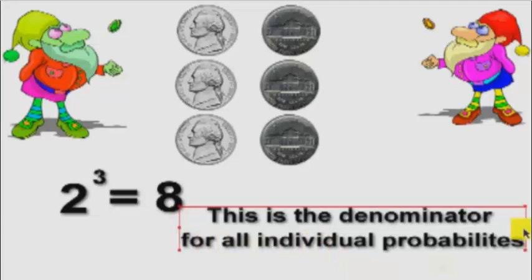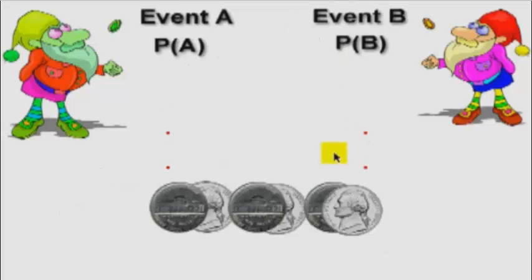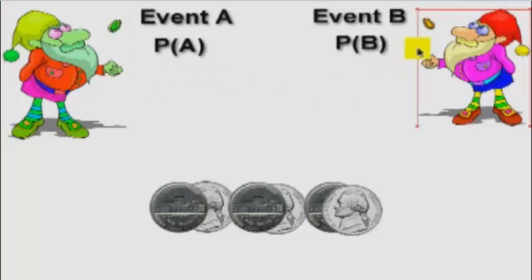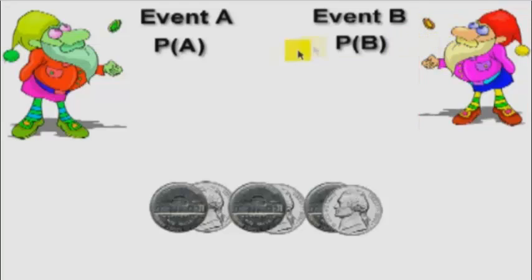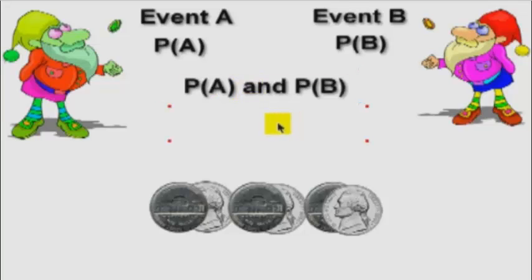Event A is the first dwarf getting whatever outcome he gets, and event B has to be the same thing for the second dwarf — he has to match whatever the first dwarf is getting. So what we're really looking for is the probability of A and the probability of B. In statistics, that means we multiply both probabilities together.